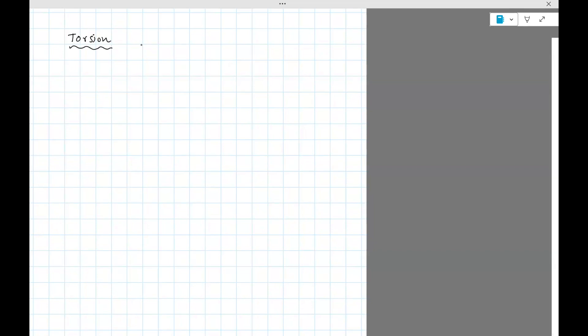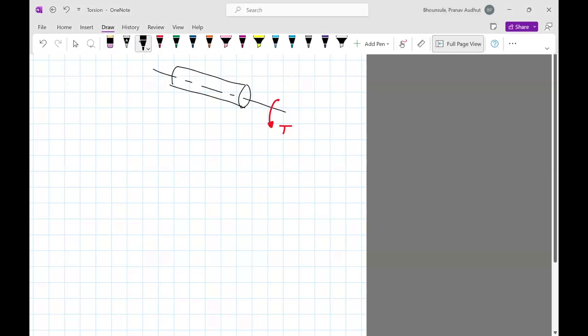Let's look at torsion, so here we are interested in a shaft. Draw an axis and then the shaft is subject to a torque and let's say that this is the z-axis.